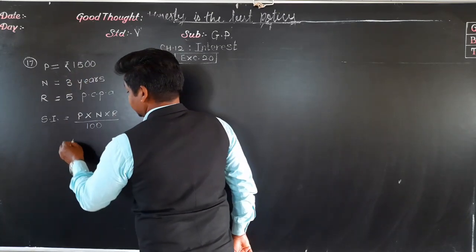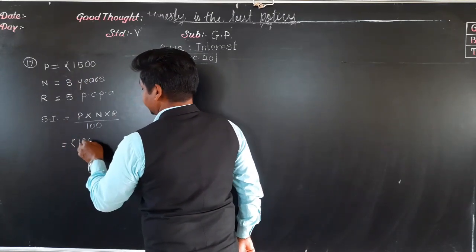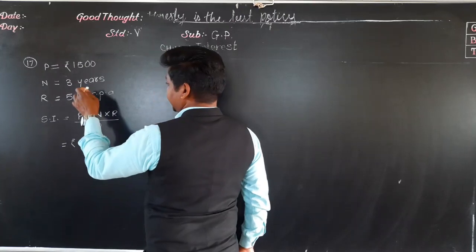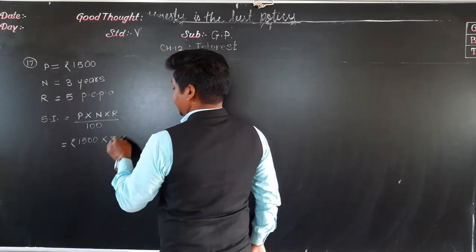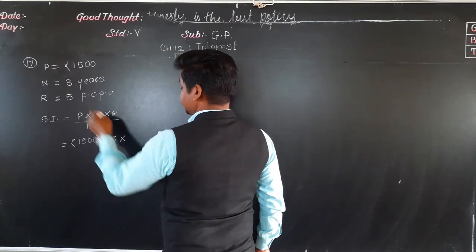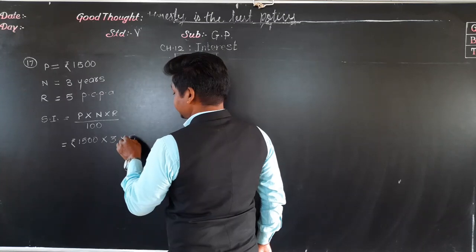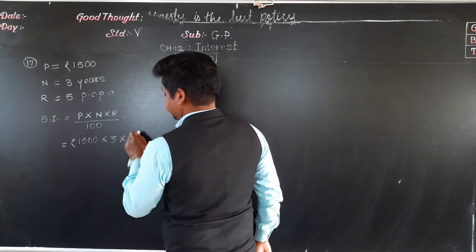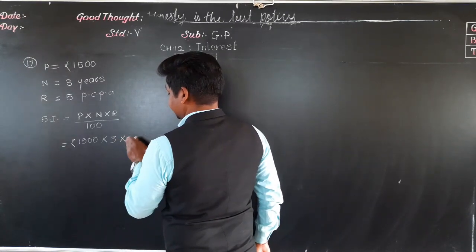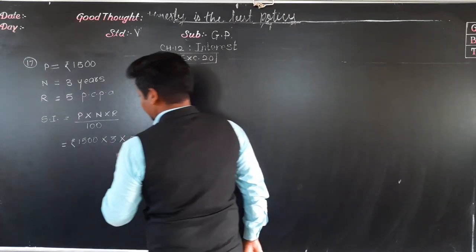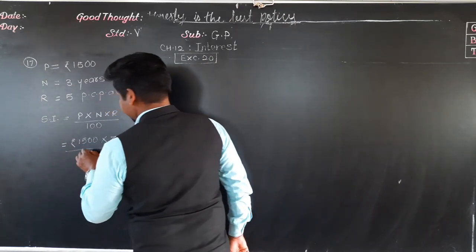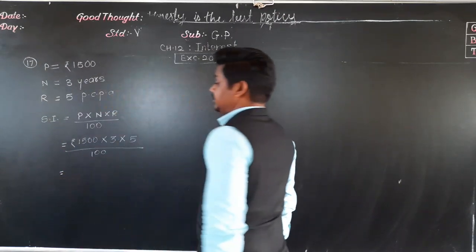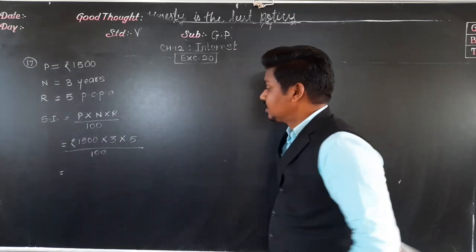P means principal is 1500, N means 3 years, and R rate of interest is 5 upon 100. So let us do the calculations.